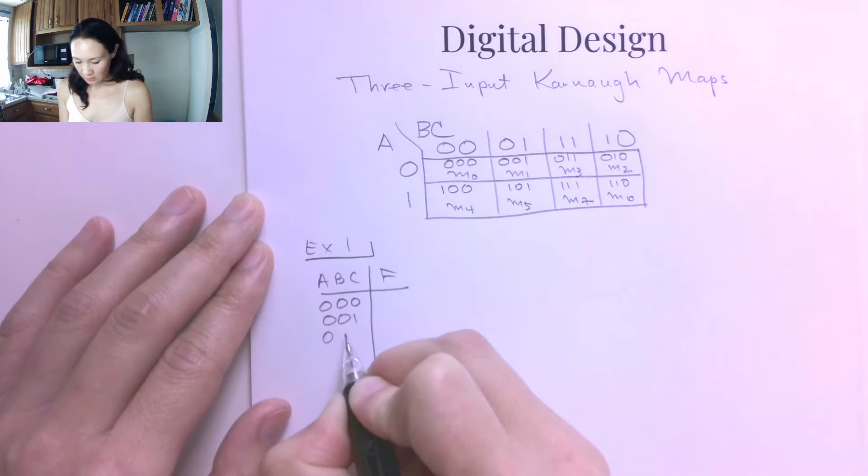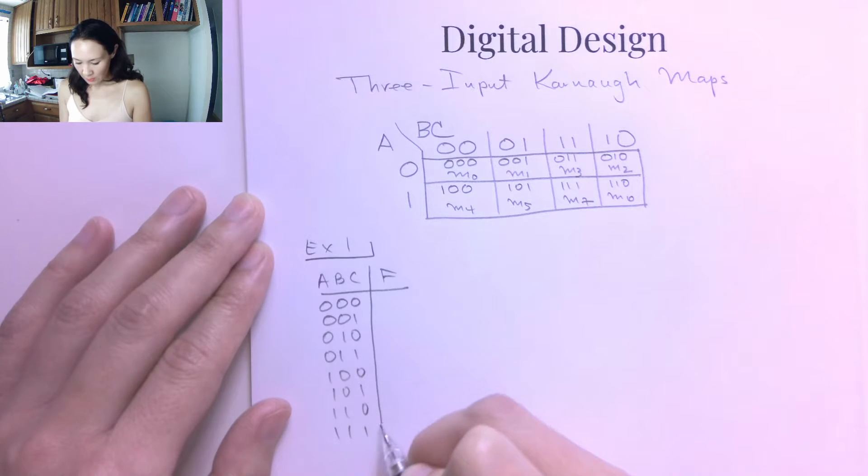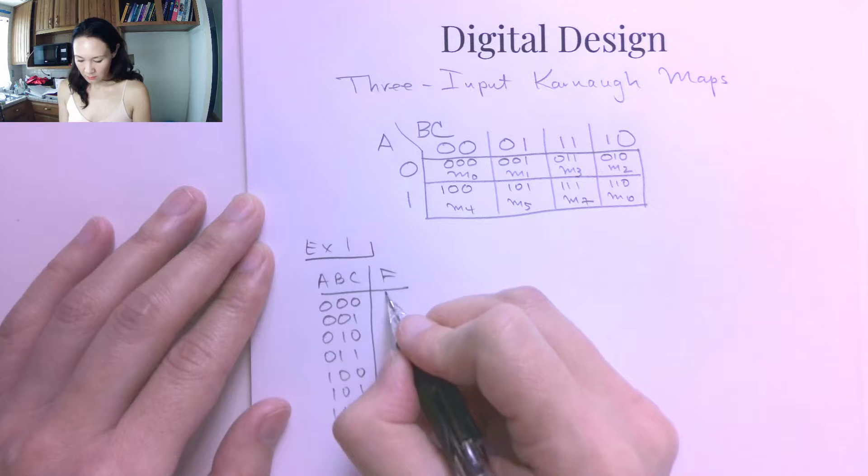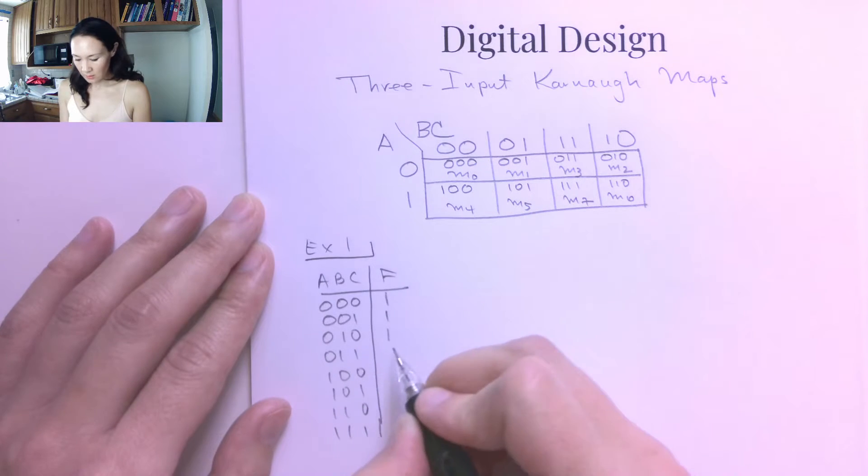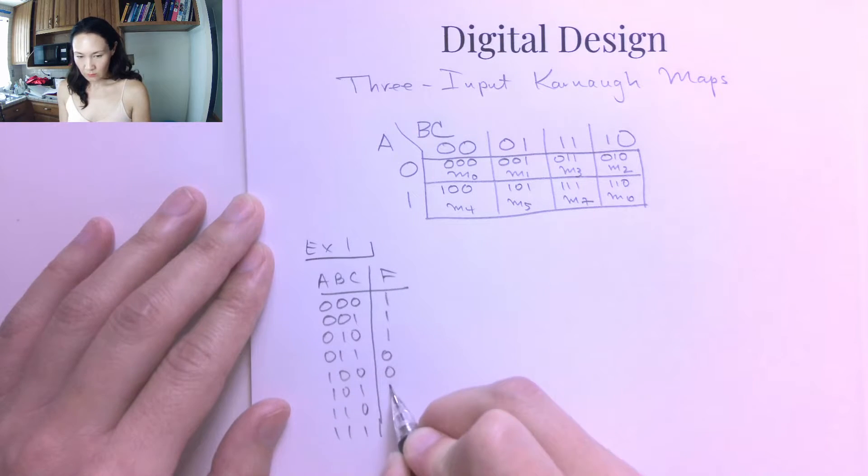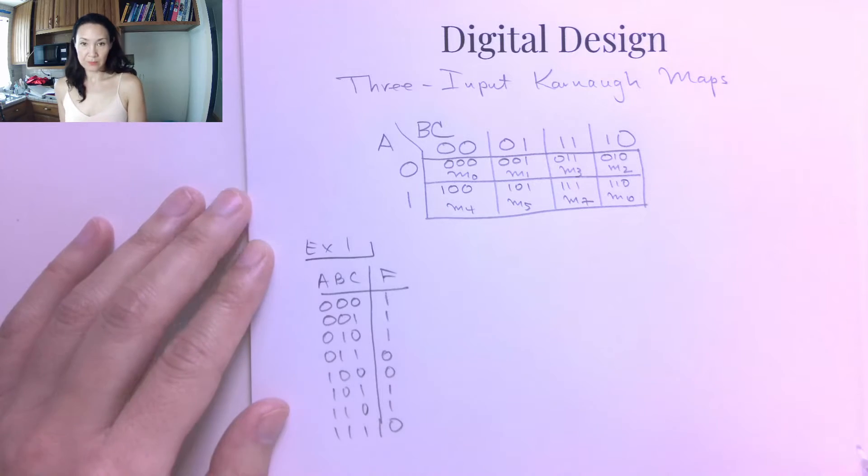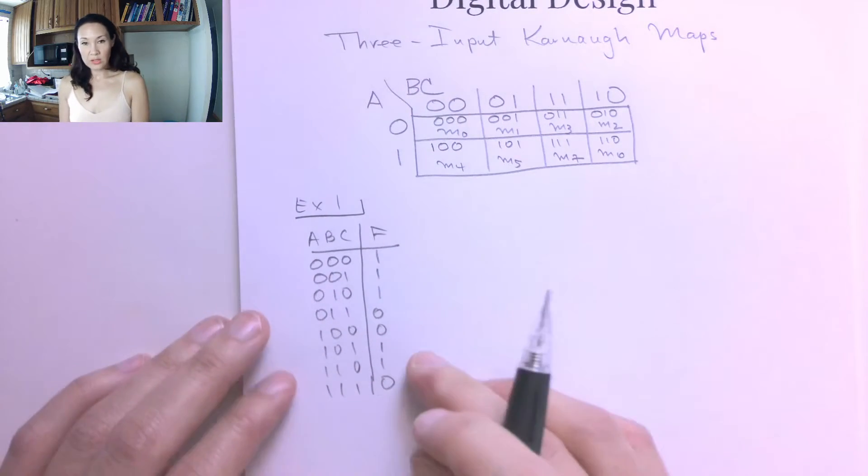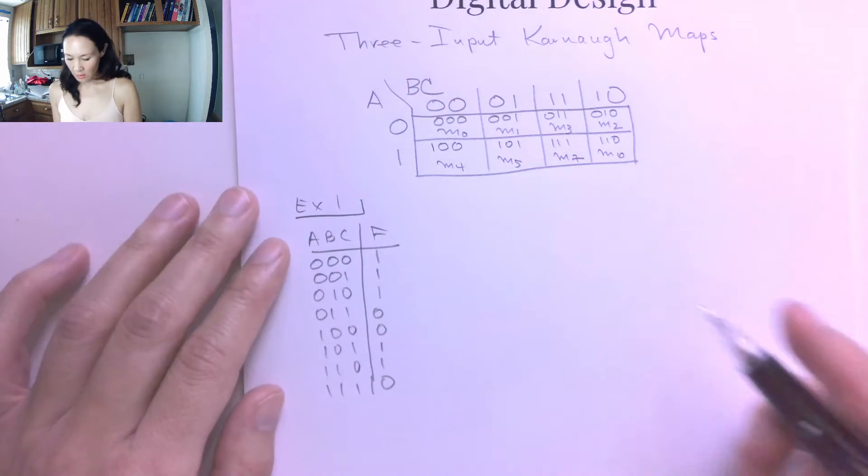Let me just make this truth table 0, 0, 1, 1, 1, 0, 0, 1, 0, 1, 0. Okay, so now we want to put this truth table into a Karnaugh map.